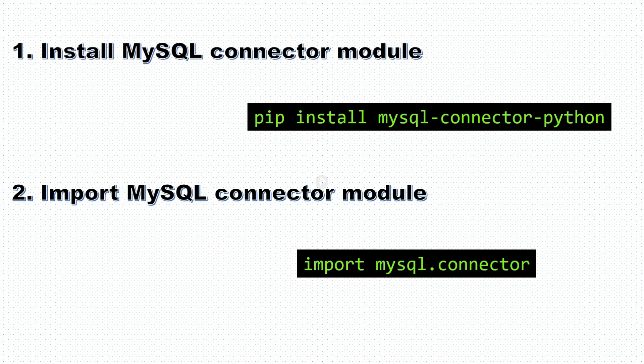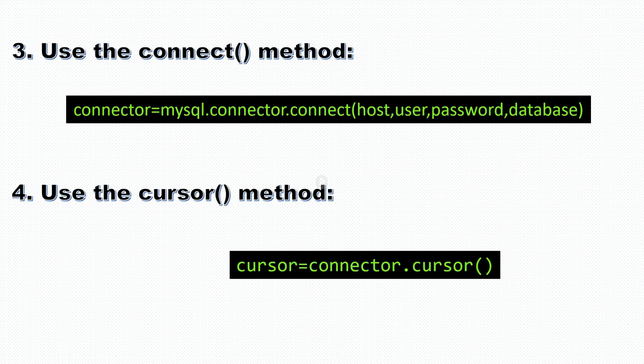The next thing is you have to import the connector in your IDE. I will be using Jupyter Notebook. The command is: import mysql.connector. Next, to connect, you have to use the connect method. You have to call the connector, then connect, and pass the arguments: host name, username, password, and database name.